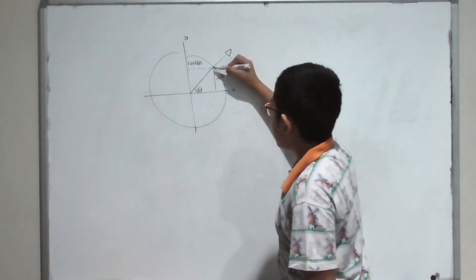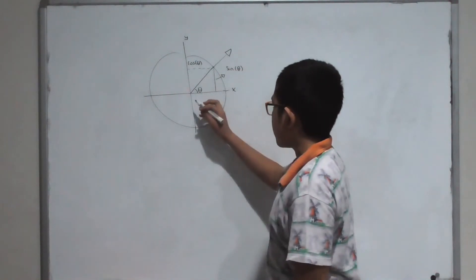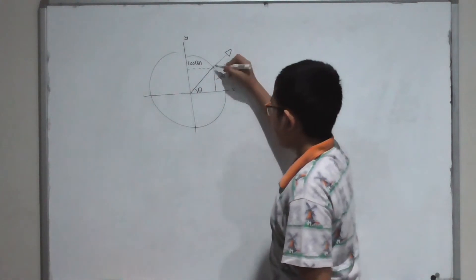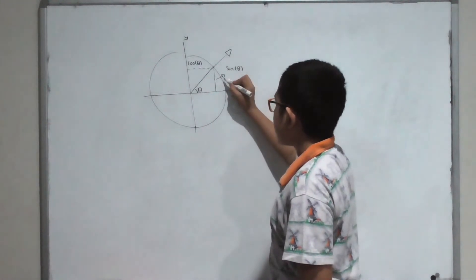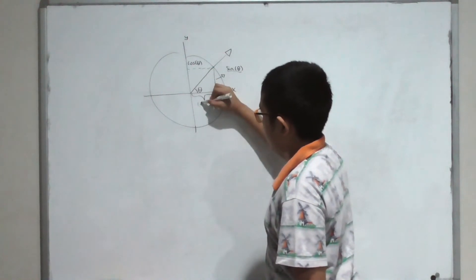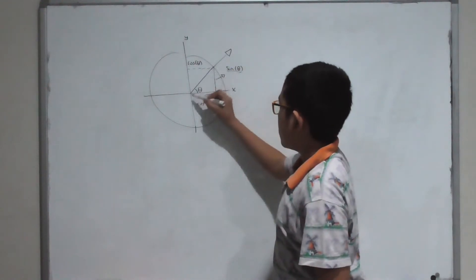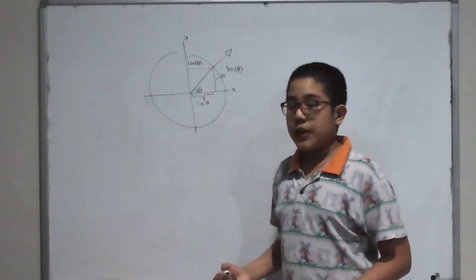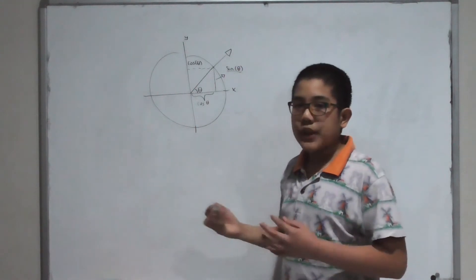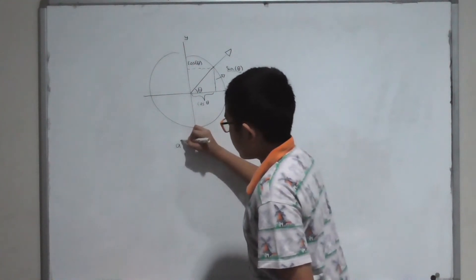With this information, let's construct a right triangle with our angle as the base. We're going to add an altitude from the point of intersection down to the x-axis, giving us this triangle. For this triangle we know two of its sides: this side is the sine of theta, and this side is the x value, the cosine of theta. The hypotenuse is one, because it's the radius of the circle.